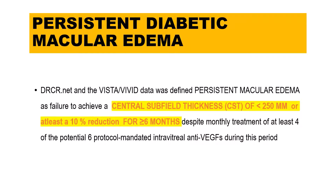One indication for using steroids in diabetic macular edema is persistent diabetic macular edema. According to the DRCR.net and the VISTA and VIVID data, persistent macular edema is defined as failure to achieve a central subfield thickness of less than 250 microns or at least a 10% reduction for a period of more than 6 months, during which the patient would have taken at least 4 out of 6 protocol-mandated intravitreal anti-VEGFs. In simple terms: treating the patient for more than 6 months with at least 4 injections, and CST on OCT is still more than 250 microns or lacks a 10% reduction.